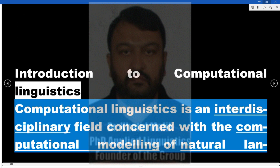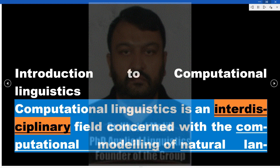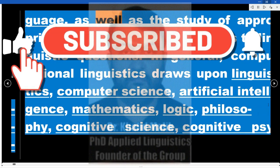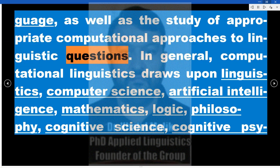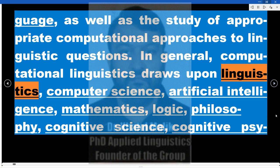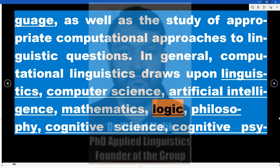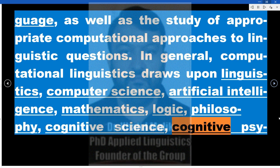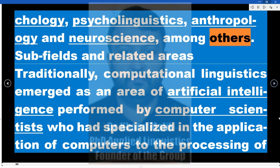Introduction to Computational Linguistics. Computational linguistics is an interdisciplinary field concerned with the computational modeling of natural language, as well as the study of appropriate computational approaches to linguistic questions. In general, computational linguistics draws upon linguistics, computer science, artificial intelligence, mathematics, logic, philosophy, cognitive science, cognitive psychology, psycholinguistics, anthropology, and neuroscience, among others.